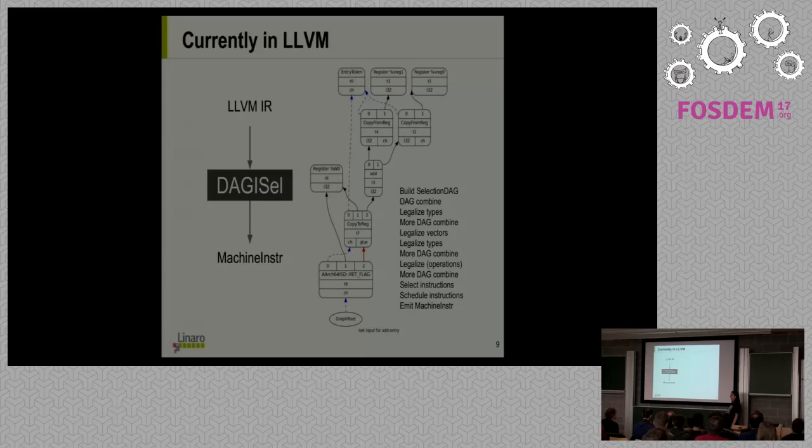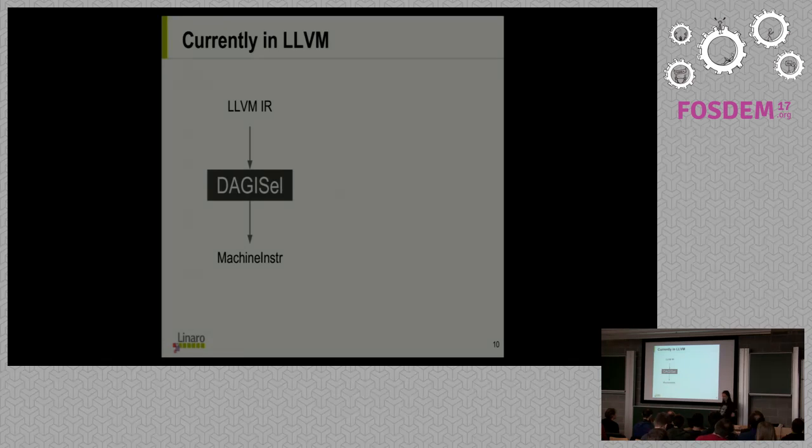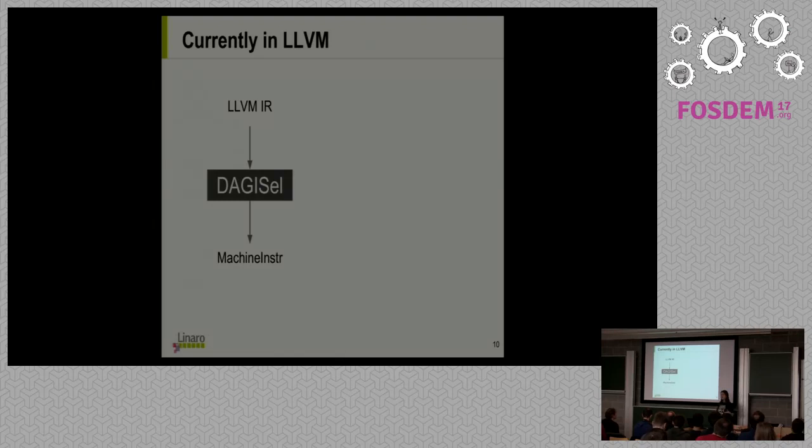Then we run more combines. Then we legalize vectors. Then we legalize types again, because maybe legalizing vectors introduced more illegal types. Then we run combines again. Then we finally legalize the operations. For instance, if there's a division operation but you don't have hardware division, you might want to replace it with a library call. Then again, more combines. Then we finally select the instructions, which means now we know everything in the code can actually be handled by the target, but we have to actually replace this with actual instructions. We do this with some complicated pattern matching algorithm that is not the purpose of this talk.